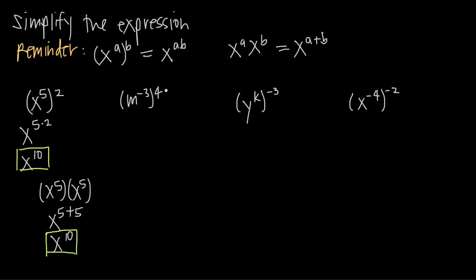Let's do another example, this one with a negative exponent. We have m raised to the negative 3 and then this whole thing raised to the power of 4. The inner exponent is negative, the outer exponent is positive. Using power rule, the fact that one of these exponents is negative doesn't make a difference. We just multiply negative 3 by positive 4. Negative 3 times positive 4 is negative 12, and we get m to the negative 12.